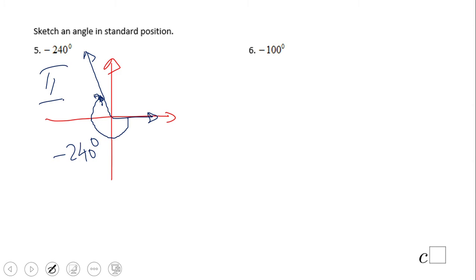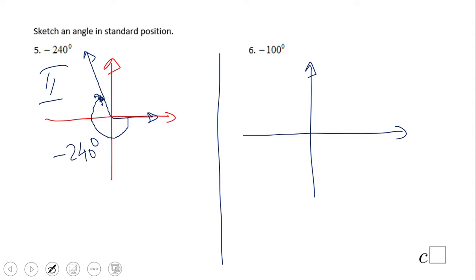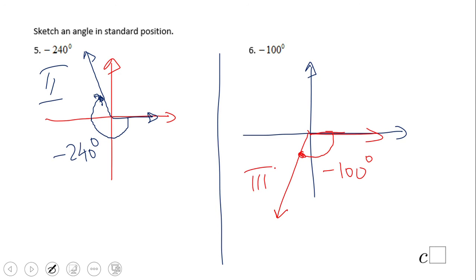What about number six? Again, initial side here, negative 100 degrees. This is negative 90, so I go 10 more degrees — something like negative 100 degrees. This is in quadrant three.